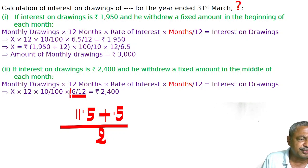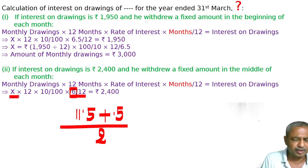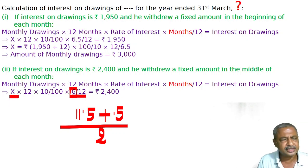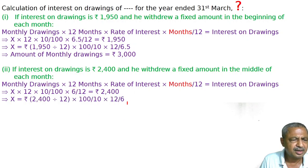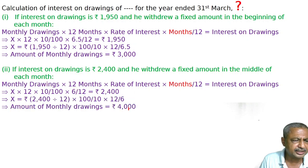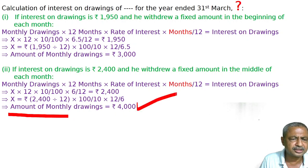The average interest is calculated for 6 months. Solve for X — the amount of monthly drawings. Setting LHS equal to RHS, the amount of monthly drawings will be 4,000.